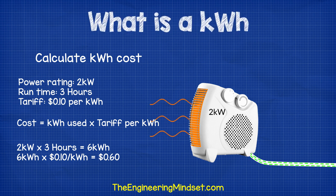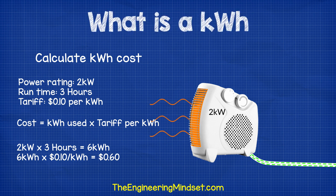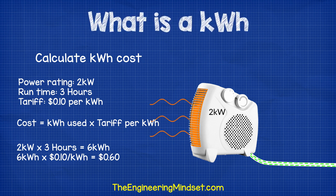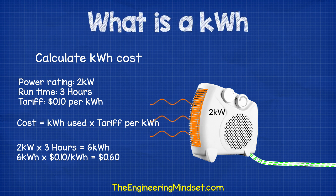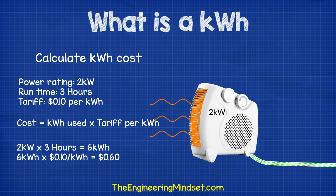If we want to calculate the cost, then we simply multiply the kilowatt hour consumption by the electricity tariff set by our electricity supplier per kilowatt hour. If we look at the heater fan, which is 2 kilowatts, and we run this for 3 hours, then 2 kilowatts multiplied by 3 hours equals 6 kilowatt hours. Our electricity company sells us electricity at 10 cents per kilowatt hour, so 6 kilowatt hours multiplied by 0.1 dollars per kilowatt hour equals 60 cents.